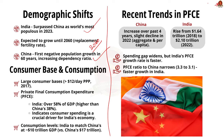Both India and China have large consumer bases defined as individuals spending over $12 a day. The Private Final Consumption Expenditure (PFCE) serves as a key measure of consumer spending. India's PFCE accounts for over 58% of its GDP, significantly higher than China's 38%. Including government consumption, the figures are 68% for India and 53% for China. While China's overall economy is approximately five times larger than India's, its PFCE is only about 3.5 times that of India's, suggesting consumer spending is a more crucial driver for India's economy.